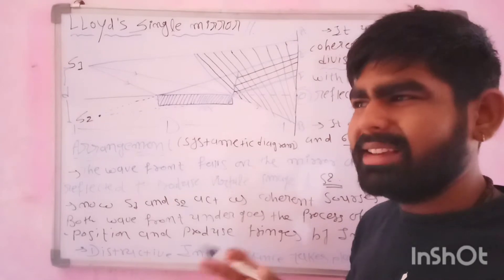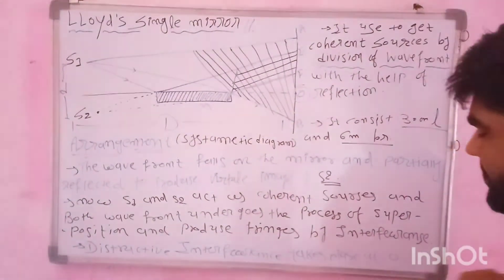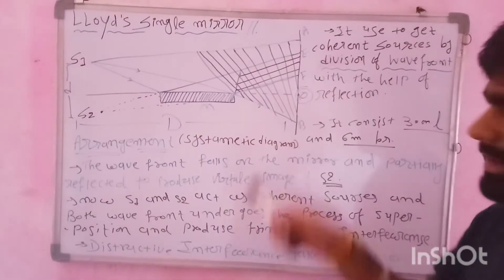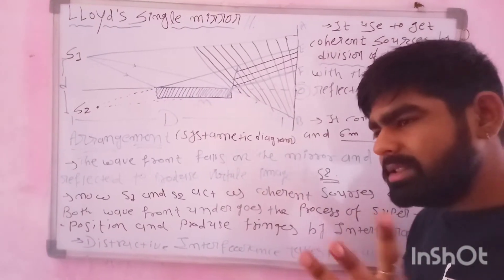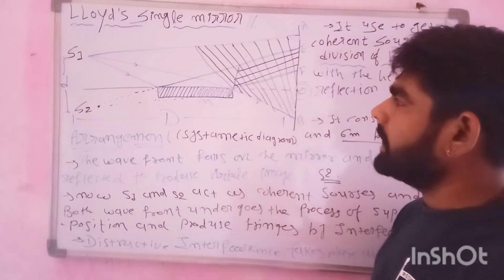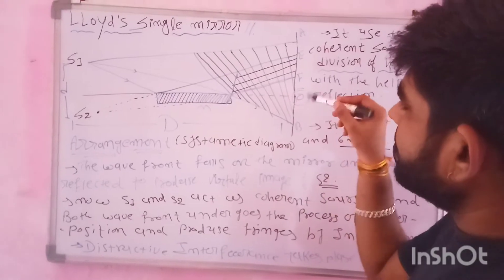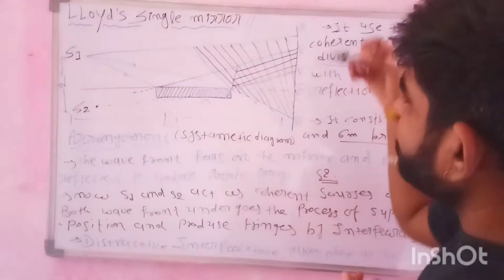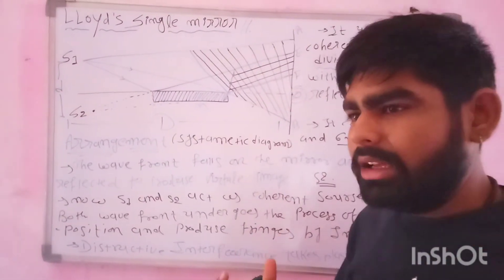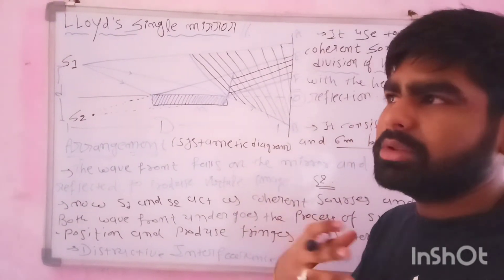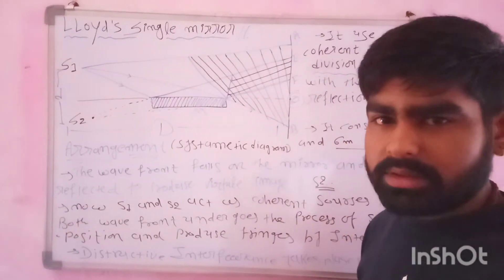I have said that destructive interference takes place at all. This is the center of interference, destructive produced. And here, both of the sides define the same fringes. We get some destructive fringes here.